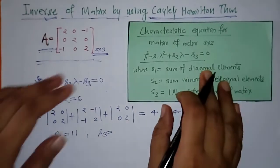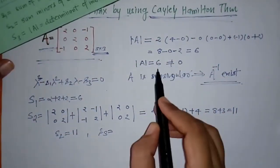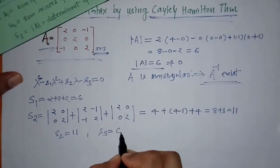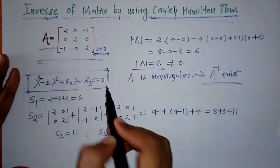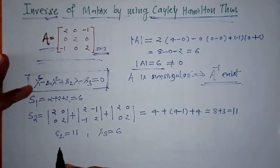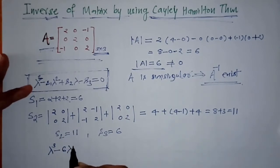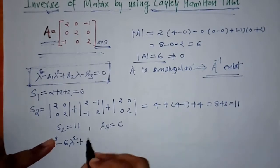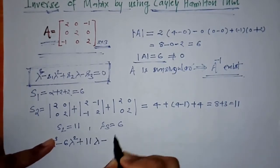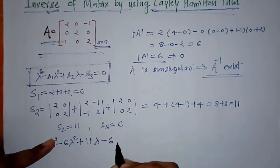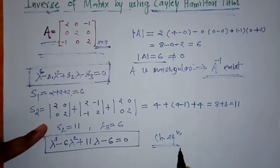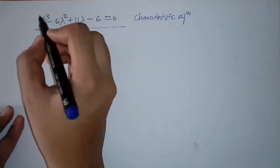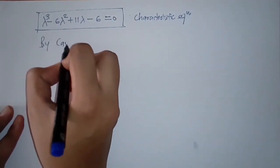S₃ is the determinant of A, which we found earlier, so S₃ = 6. Now we put all these values into the general form of the characteristic equation and we get: λ³ − 6λ² + 11λ − 6 = 0. This is the characteristic equation for the given matrix.